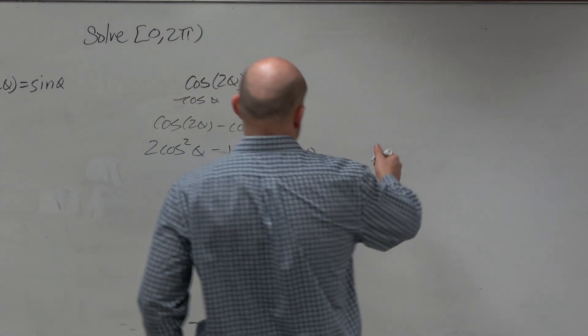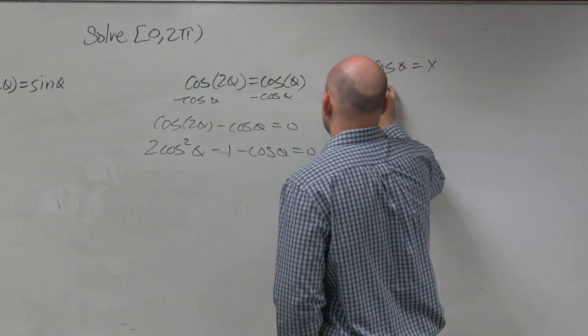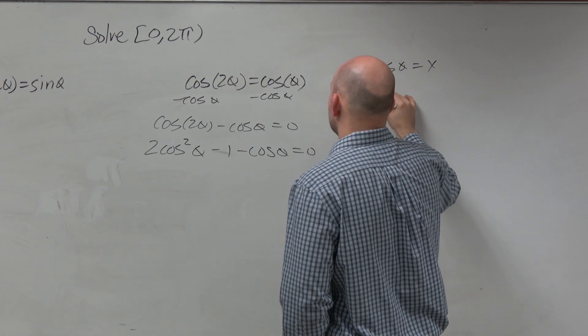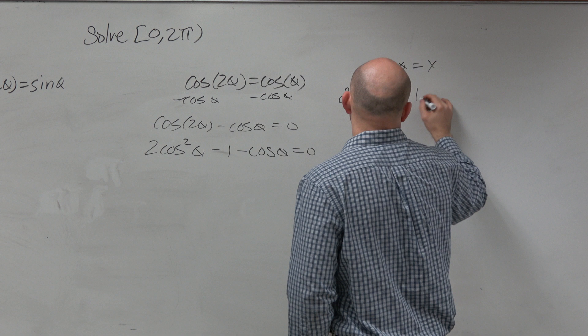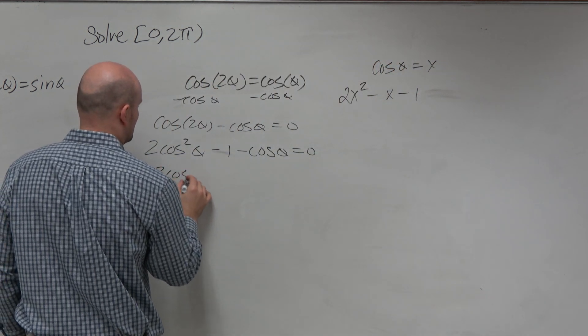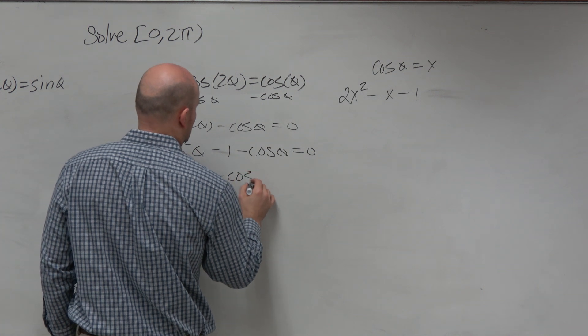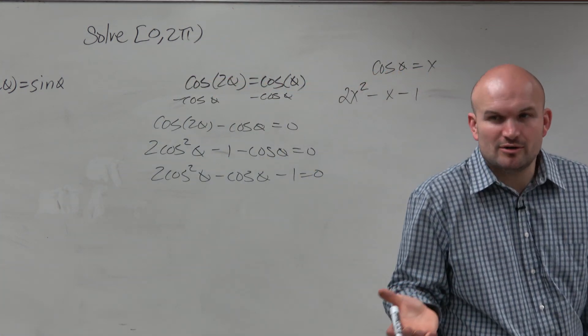Yeah. Like if I was going to say cosine of theta equals x, then I could write that as 2x squared minus x. Just rearrange it a little bit. Right? It's just a quadratic. Or it's a trinomial. We love factoring trinomials, right?